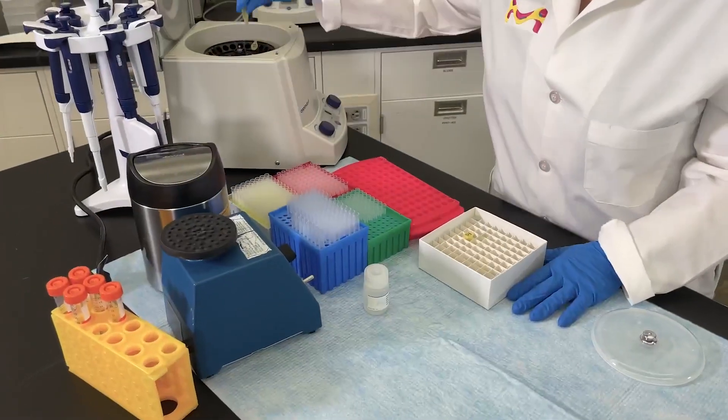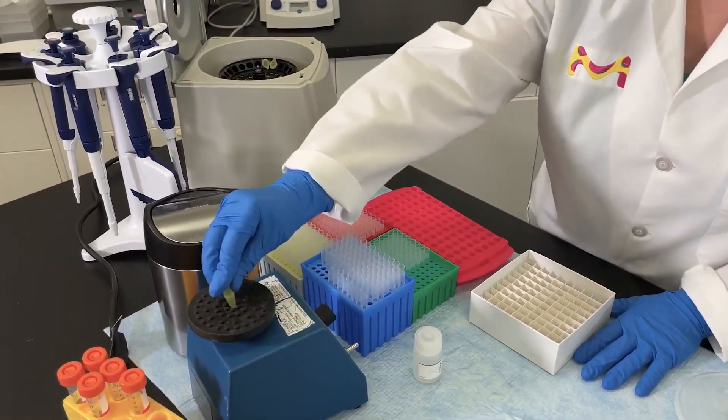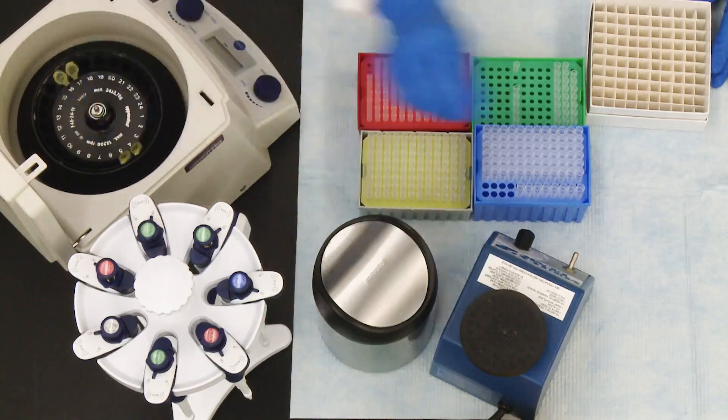Vortexing after thawing is recommended for a homogenous sample, followed by centrifugation to reduce the possibility of beta aggregation.